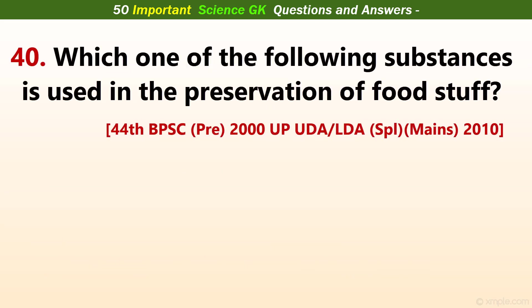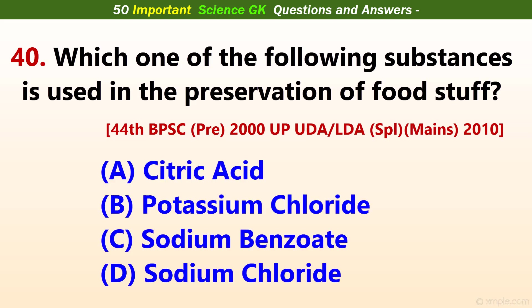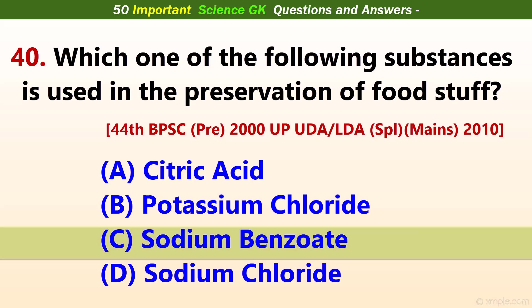Which one of the following substances is used in the preservation of food stuff? Answer C: Sodium benzoate.